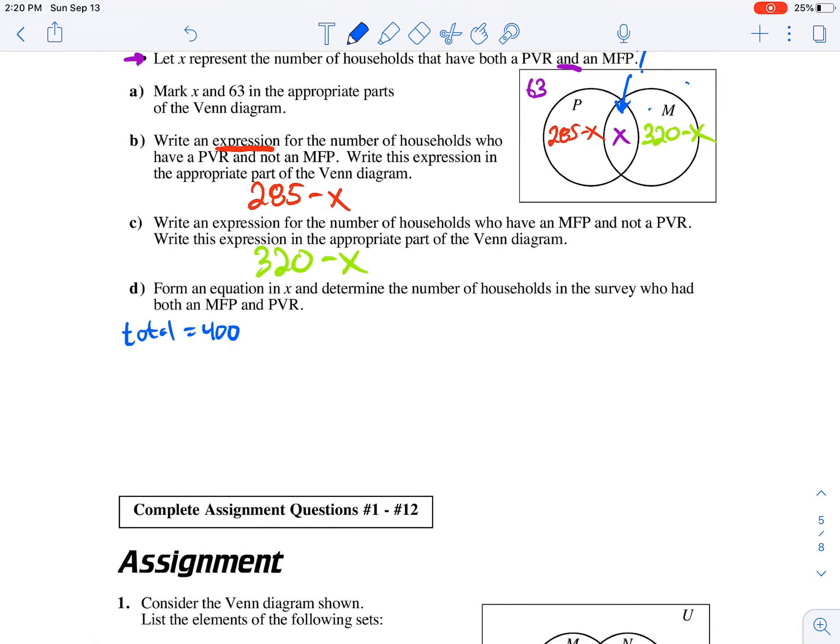What happens if we sum up the four regions? They should sum to 400. So I know 400 is equal to 63 plus 285 minus X plus X plus 320 minus X. So here's our equation that we have to solve.